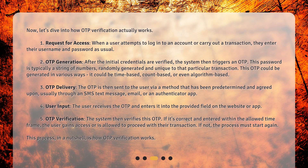3. OTP delivery: The OTP is then sent to the user via a method that has been predetermined and agreed upon, usually through an SMS text message, email, or an authenticator app. 4. User input: The user receives the OTP and enters it into the provided field on the website or app. 5. OTP verification: The system then verifies this OTP. If it's correct and entered within the allowed timeframe, the user gains access or is allowed to proceed with their transaction. If not, the process must start again. This process, in a nutshell, is how OTP verification works.